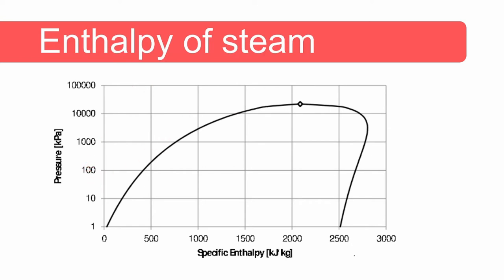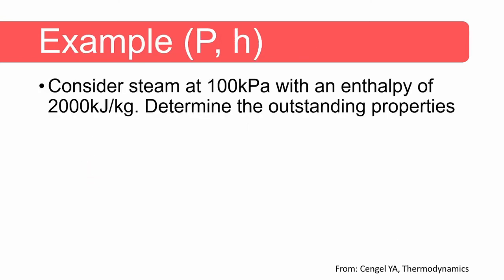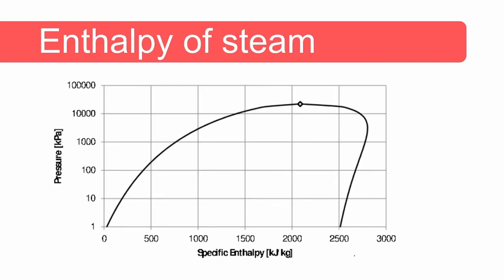Let's do a few examples. Consider steam at 100 kilopascal with an enthalpy of 2000 kilojoules per kilogram. We need to determine the outstanding properties. We first need to determine the phase — is it superheated, two-phase, or a compressed liquid? When we plot the state of our system on the pressure-enthalpy diagram, it is clear that it lies inside the dome and is therefore a two-phase mixture.